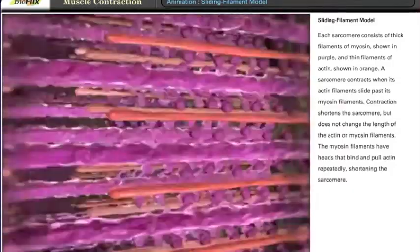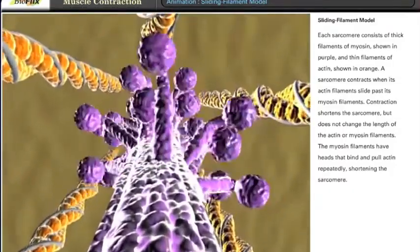The myosin filaments have heads that bind and pull actin repeatedly, shortening the sarcomere.